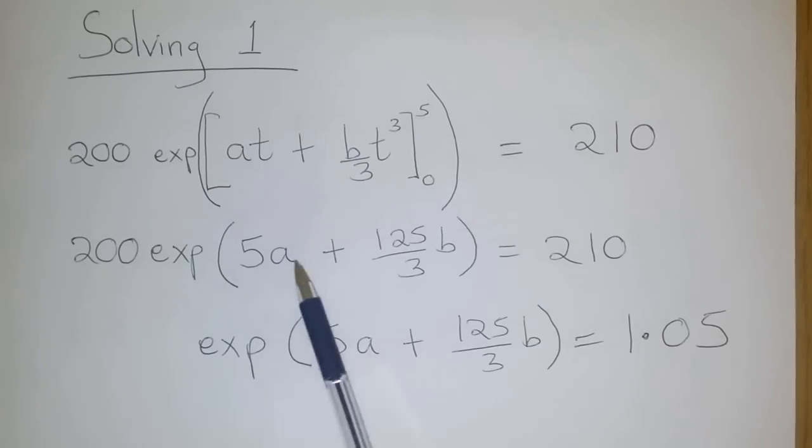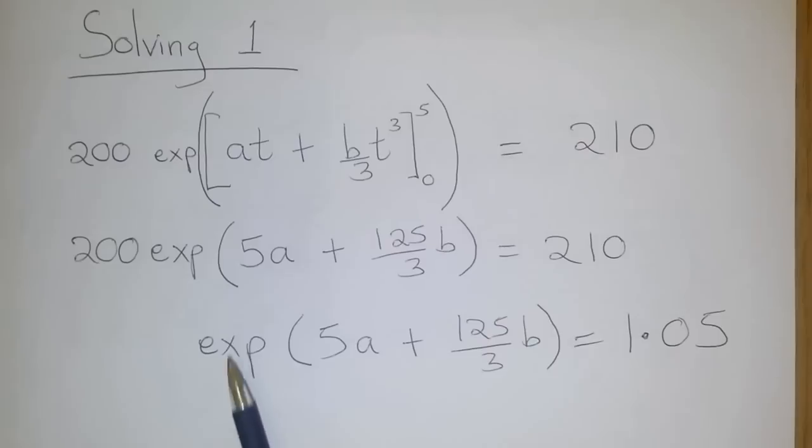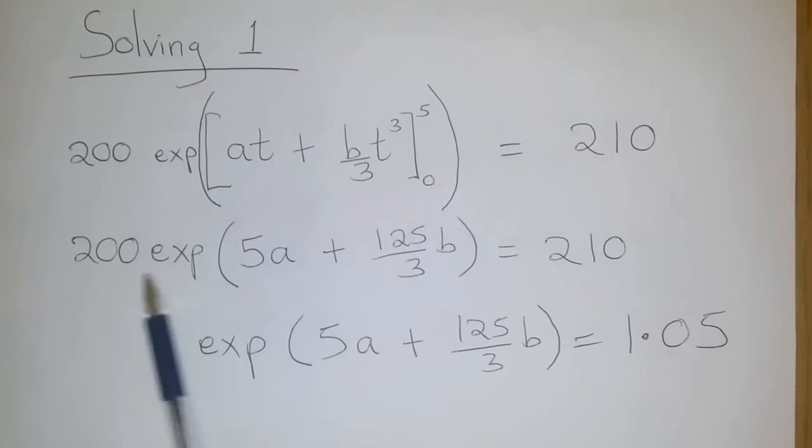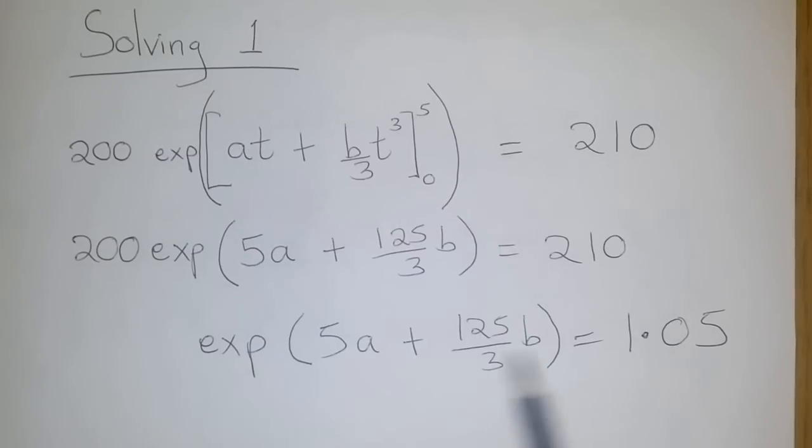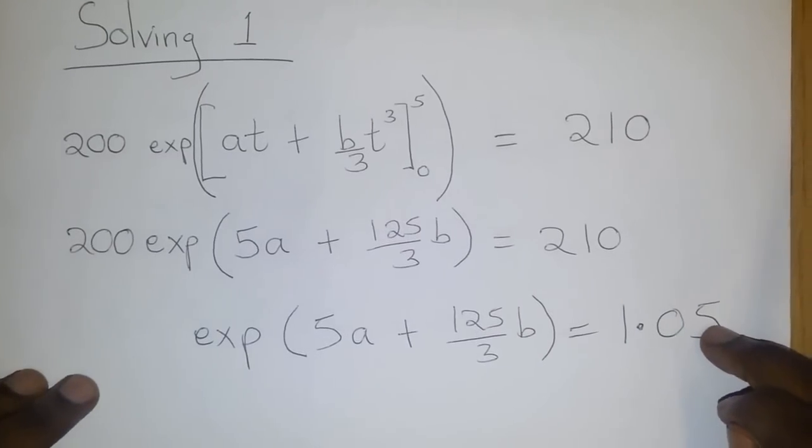Introducing the limits gives us 5a plus 125 over 3 b. Now, the exponential of that multiplied by 200 gives us 210. Dividing through by 200 leaves us with this equation here. Now, this is equation 1.